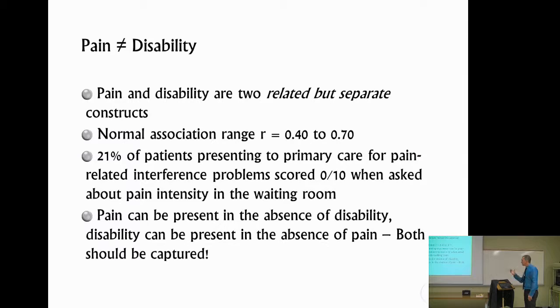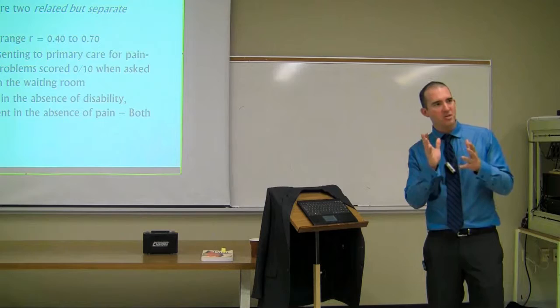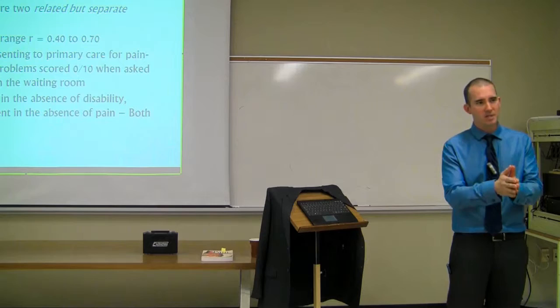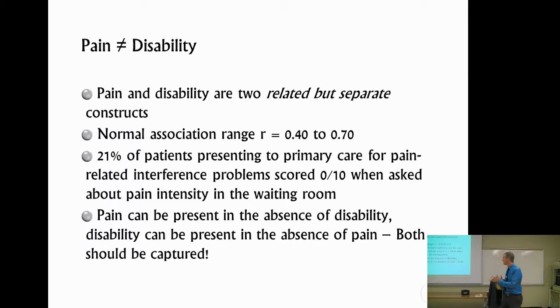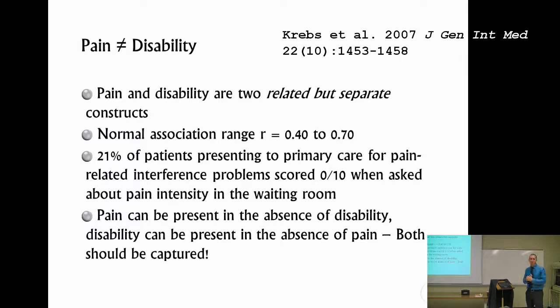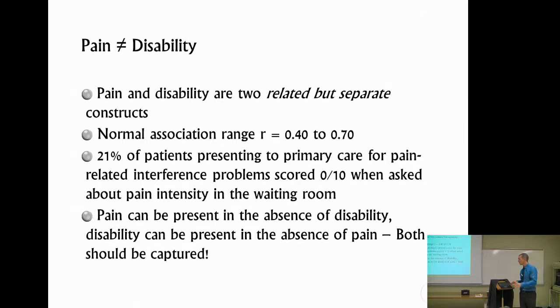Normally there is an association between pain and disability depending on the condition. It ranges from small to moderate — think Pearson's R correlations — about 0.4, which is not terribly strong, up to about 0.7. In other words, they're connected and associated, but they're not the same thing. In fact, 21% of patients presenting to primary care for pain-related interference problems scored 0 out of 10 on pain in the waiting room. So we can't infer one by knowing the other — pain can be present in the absence of disability, and disability can be present in the absence of pain.